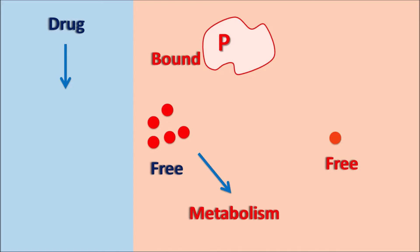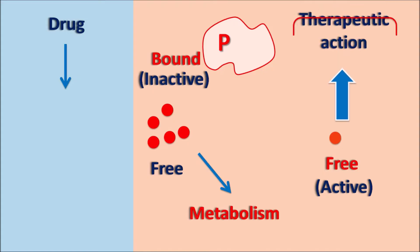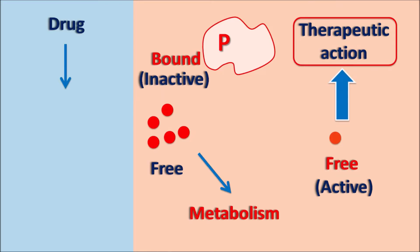Within the systemic circulation, the drug is present as a free form or as a bound form. The free form is the active form of the drug, whereas the bound form is the inactive form of the drug. So protein binding is a reversible process where the drug is converted into the inactive form on binding with the proteins, and it is re-converted to the active form when dissociated from the proteins. The therapeutic action of the drug mainly depends on the free form or the active form of the drug. That is why the protein binding kinetics are very important in order to assess the kinetics of the drug as well as its therapeutic action in the body.